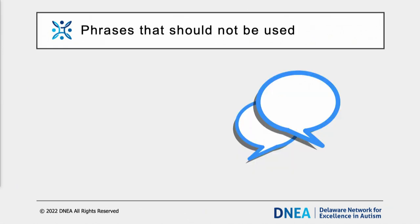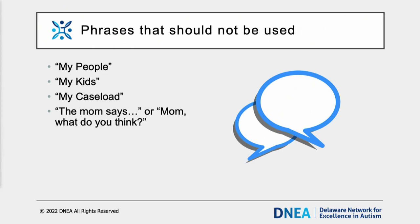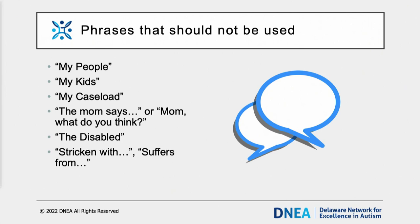It is important to communicate respect for people when using either person or identity-first language. This is a list of some phrases to avoid when talking about a person with a disability. Instead of saying 'my people,' 'my kids,' or 'my caseload,' refer to your students by name or by the group you are working with, such as 'students in my classroom.' Instead of referencing a student's parent as 'mom,' call them by their name or reference them in relation to your student, such as 'Billy's parents.' Acceptable alternatives to 'the disabled' include neutral language like 'they have a disability.'